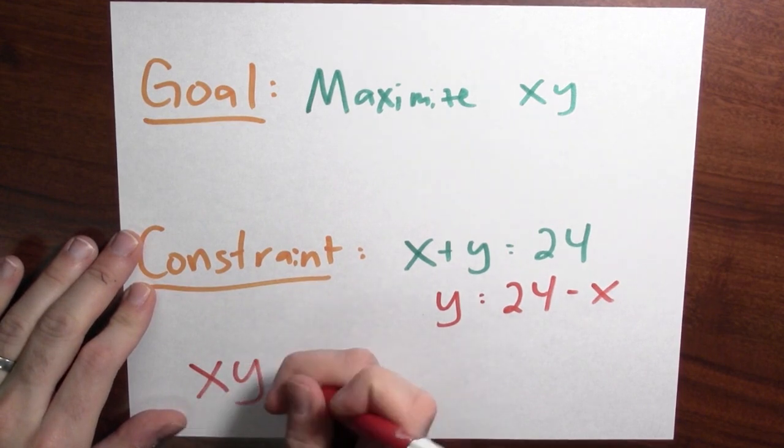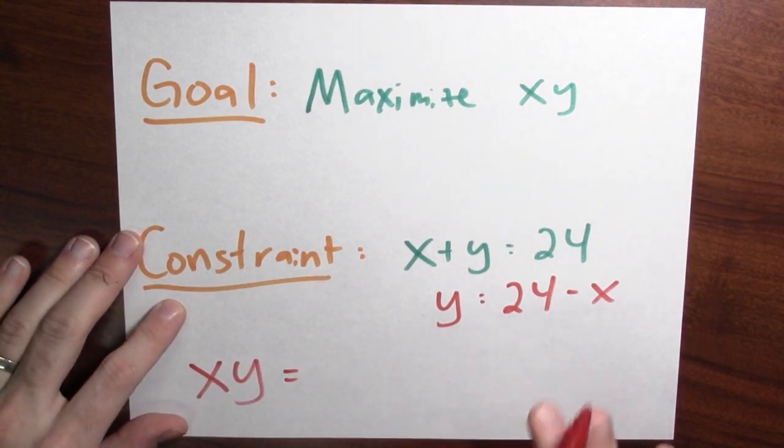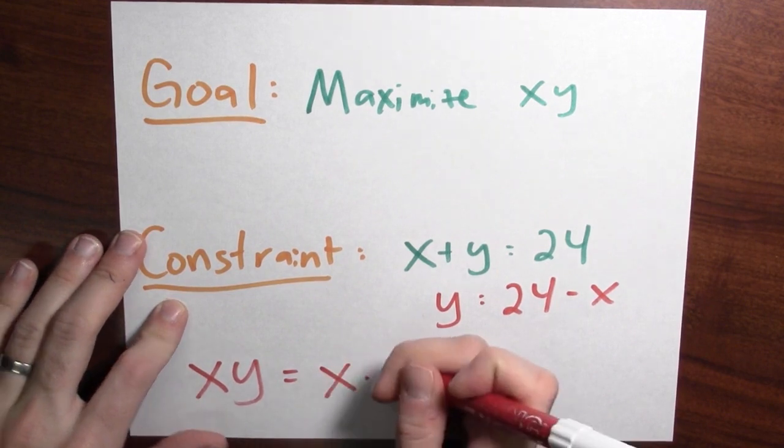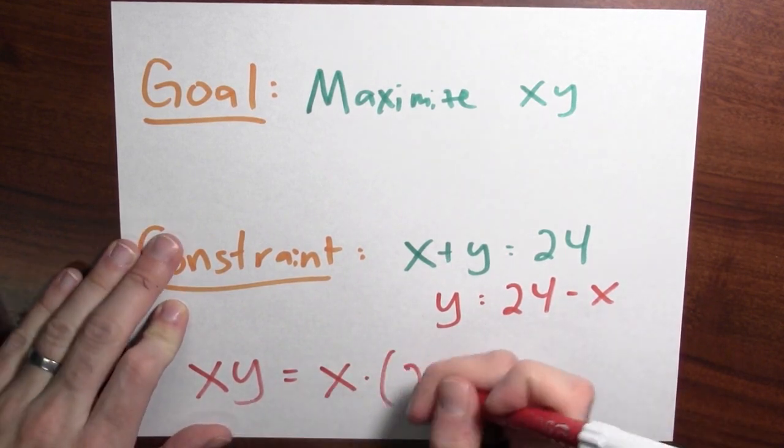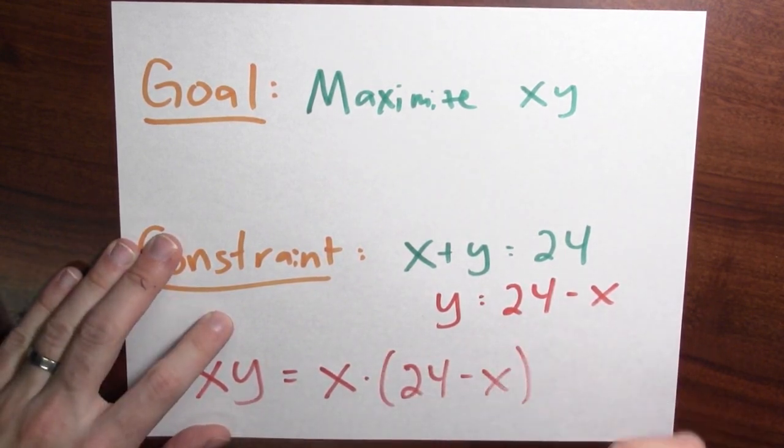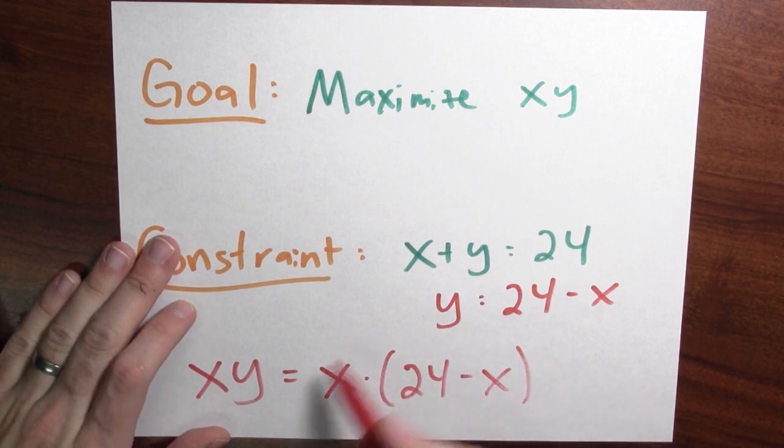And consequently, x times y, which is the thing I'm trying to maximize, I could write that as a function of a single variable. X times, and instead of y, 24 minus x. So this is the quantity now that I want to maximize. Now I can apply calculus.